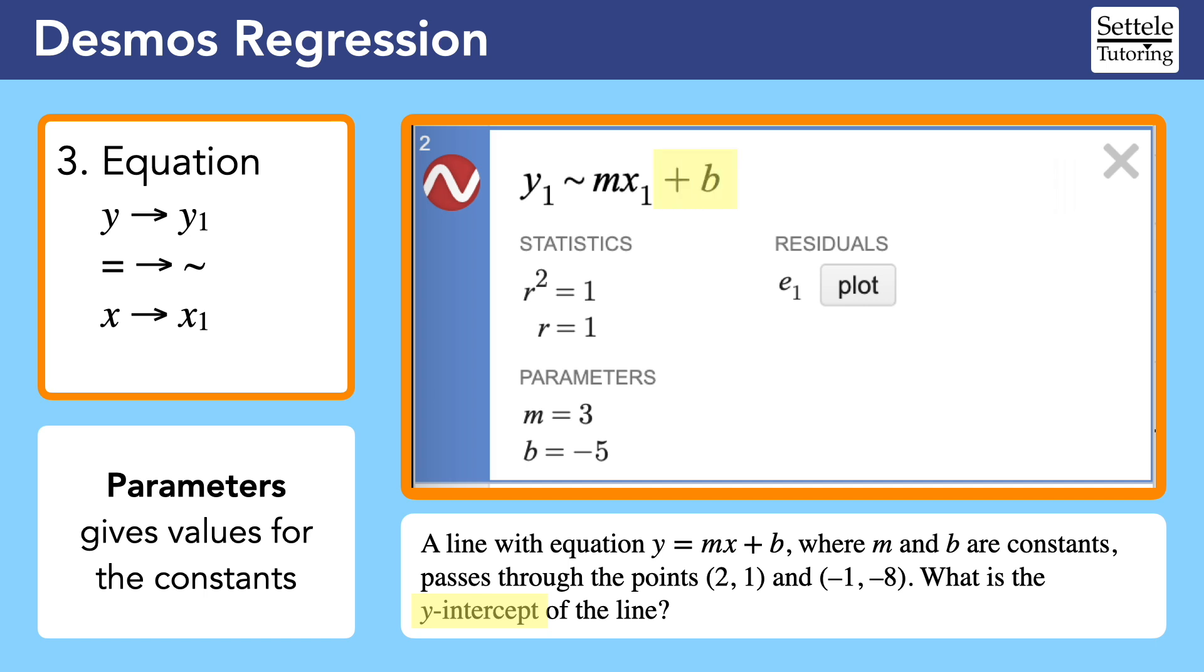Hopefully, we've memorized that the b portion of y equals mx plus b gives the y-intercept. Desmos says that b is equal to negative 5, so we're done. The answer to the question is negative 5.